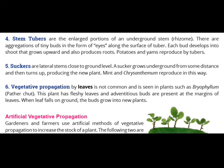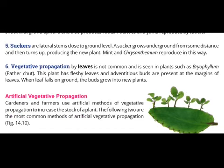These lateral stems grow underground from some distance and then turn upward, producing new plants. Mint and chrysanthemum reproduce by this method. The last method is vegetative propagation by leaves.